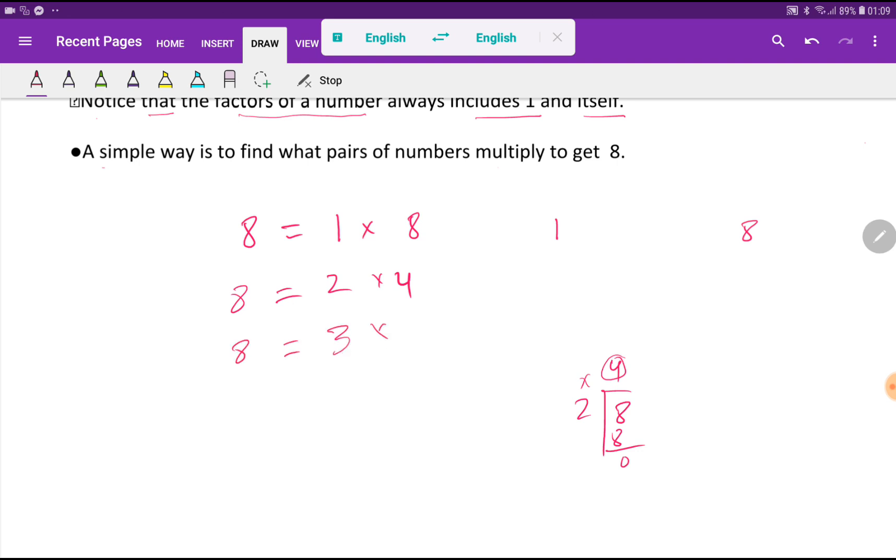Now, write 3. So what will come here? If you divide 8 by 3, what will happen? So your remainder is 2. So 3, 8 is not divisible. 8 is not divisible by 3 completely. So 3 is not your factor.